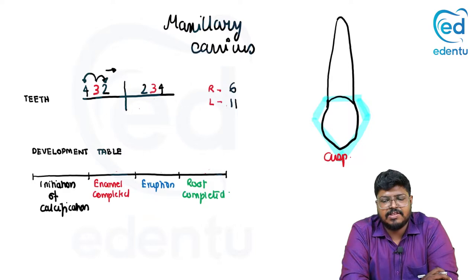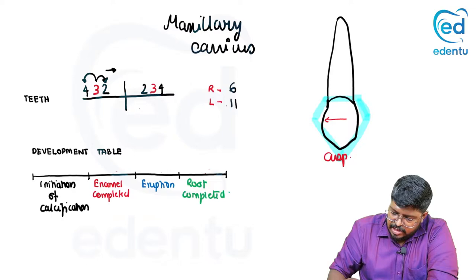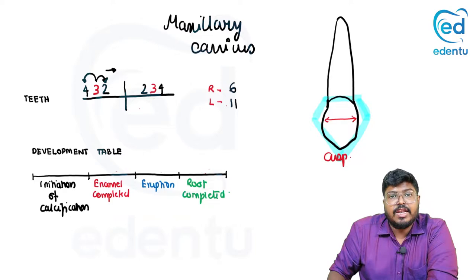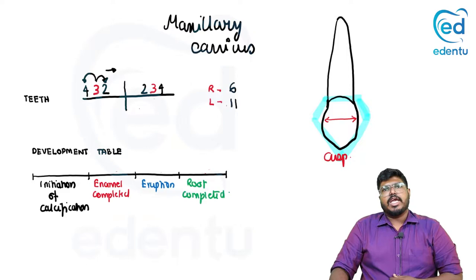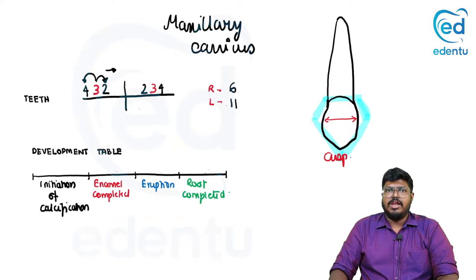Compared to the maxillary central incisor, the crown length is almost the same. However, the canine has a lesser mesiodistal width because it narrows down. Labiolingually, the crown is much wider due to the heft. The cingulum shows much greater development to add bulk to the tooth. The middle lobe of the canine is much better developed because the long axis passes through it, and force transmission must go through the middle lobe.